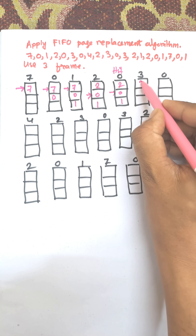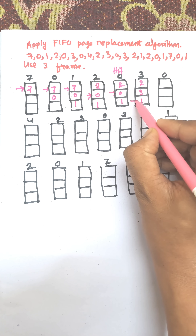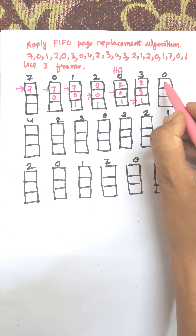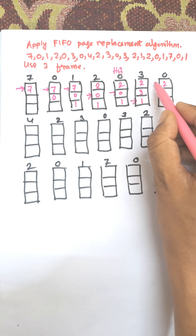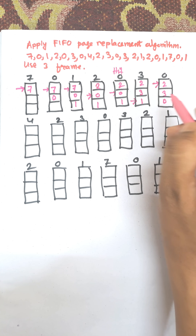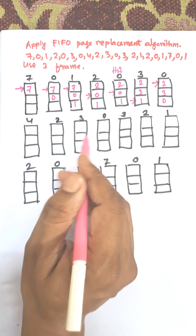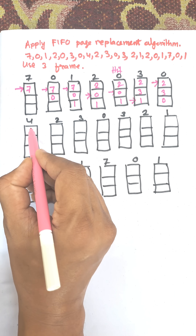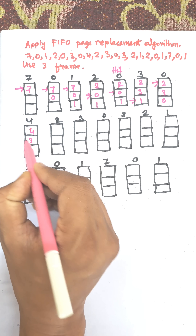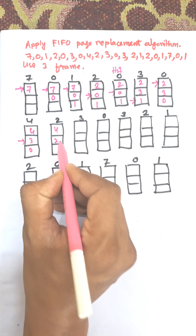Now page 3 comes in: 0 is replaced by 3, giving frames 2, 3, 1, and the pointer shifts to 1. Next, 0 comes in: 1 is replaced by 0, giving 2, 3, 0, and the pointer moves back to the first position in a circular rotation. Next, page 4 comes in: 2 is replaced, giving frames 4, 3, 0.